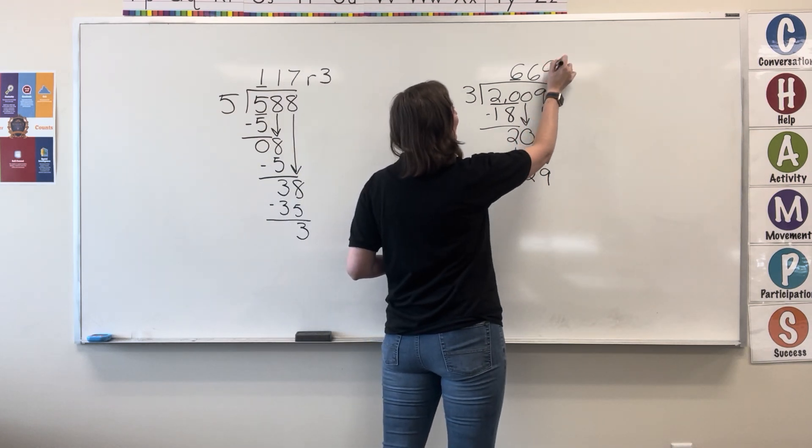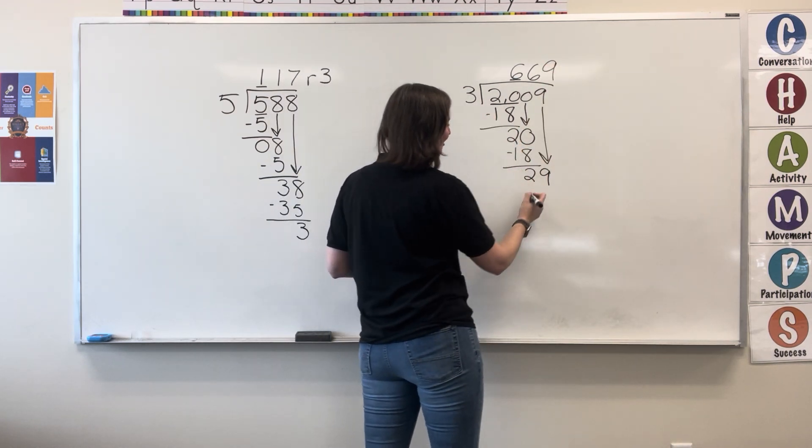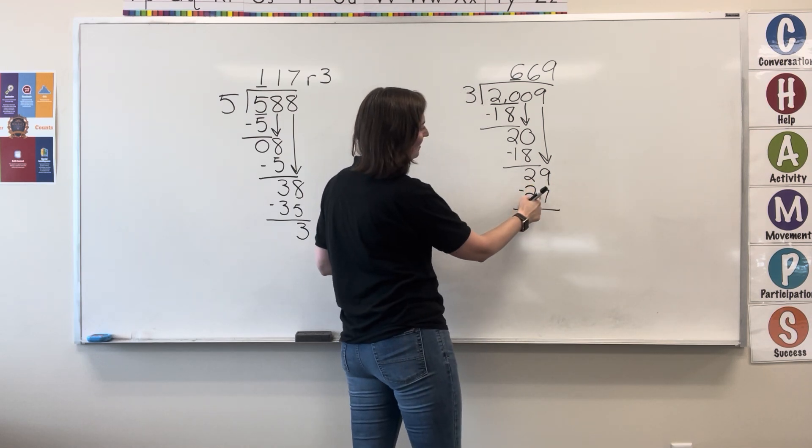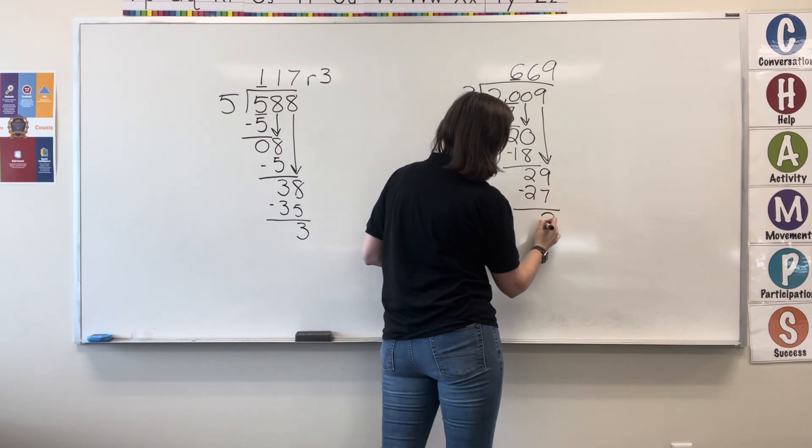9 times. 9 times 3 equals 27. Write the 27. Now subtract. 9 minus 7... 9 equals 2. Write the 2.